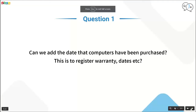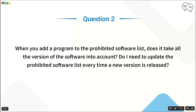FAQ: When you add a new program to the Prohibit Software list, does it account for all versions? If you select a single version, only that version is prohibited. To prohibit all versions, use Group Software under Inventory > Manage License > Group Software tab — group all versions into a single group, then add that group to the Prohibit Software list.